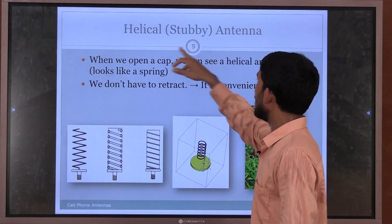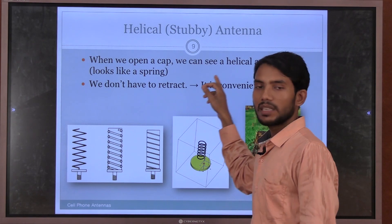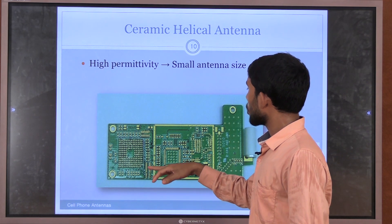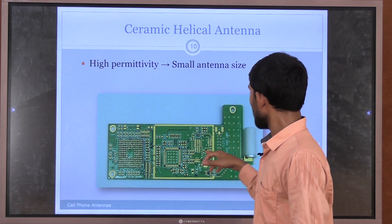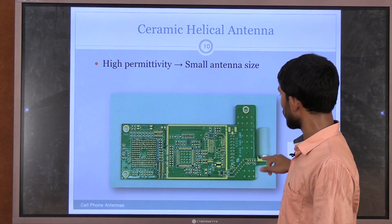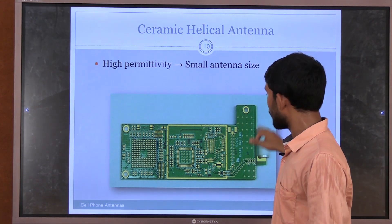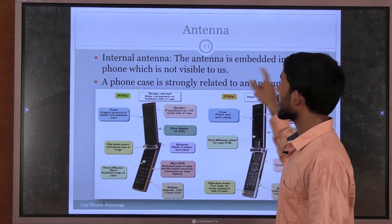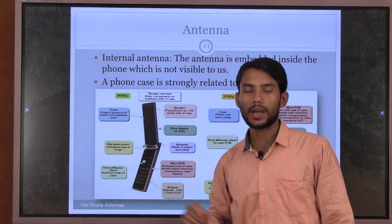The helical antenna has a spring-like structure and is also used in smartphones. There is also the printed antenna — a small helical antenna, and a ceramic helical antenna, both used in cell phones. The internal antenna is embedded inside the phone and is not visible to us.